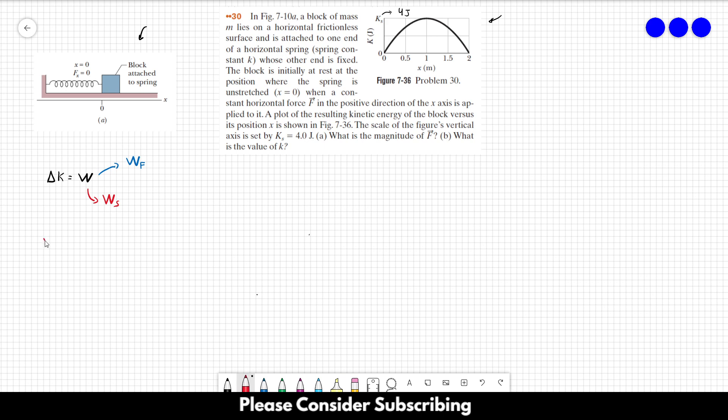The work done by the spring is pretty simple. It's just 1 over 2k, initial position squared, minus 1 over 2k, the final position squared. And the work done by the force F, since its value is constant, we can just use its force times delta x, which is the final position, right? Because it starts at x equals 0.